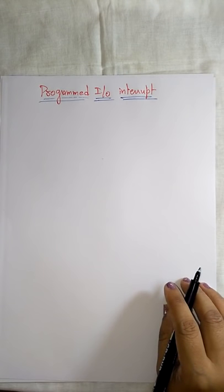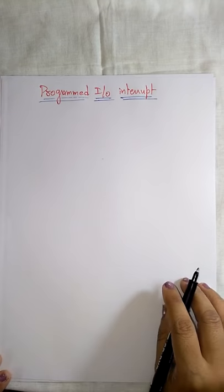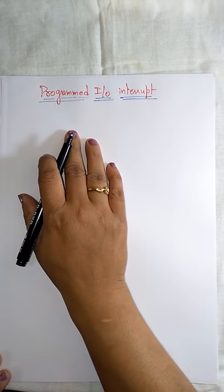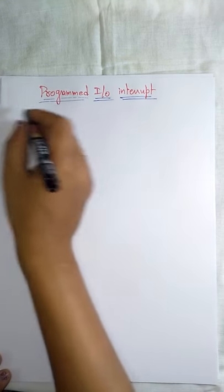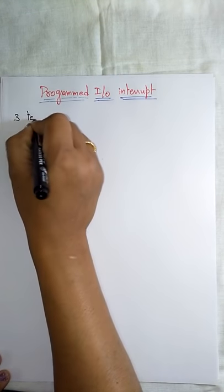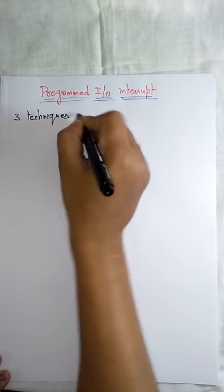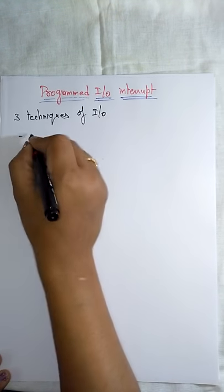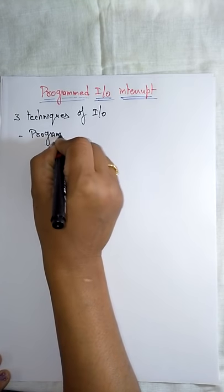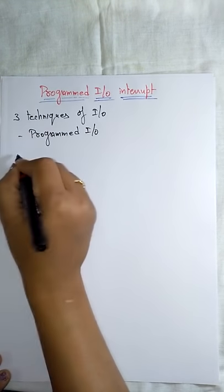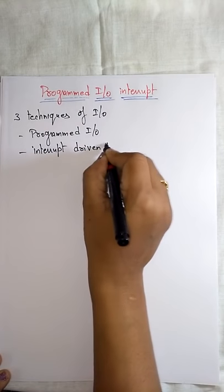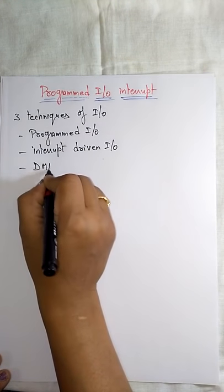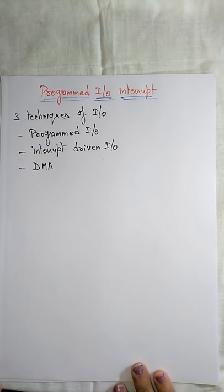Hi students. Coming to our next topic, that is Programmed I/O Interrupt. Before going to know about this, you have to know about the three techniques that are used by the I/O devices. The three techniques are: Programmed I/O, Interrupt-driven I/O, and DMA. These are the main three techniques of I/O.